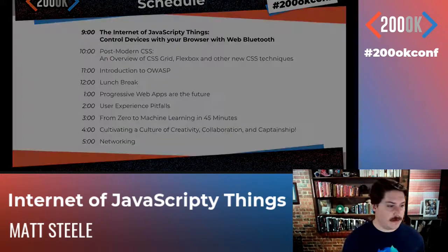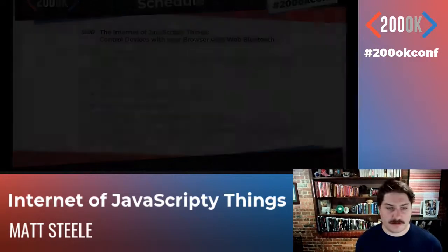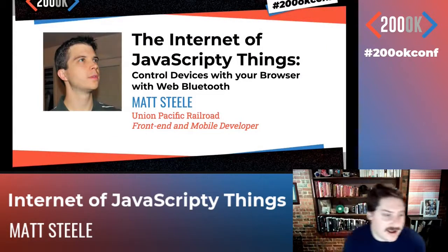First up, we have Matt Steele from Omaha, Nebraska. Matt is a front-end and mobile developer at Union Pacific Railroad. He blogs at Steele.blue and loves hooking things together that shouldn't go together. Matt's going to talk to us today about Web Bluetooth API, a new way to control physical devices directly from your browser. We'll see how to build web apps that react to Bluetooth inputs, how to reverse engineer strange array buffer streams, and how to power your conference slide deck with a bicycle. Everyone, give it up for Matt, our first speaker at the 2020 200OK Virtual Conference.